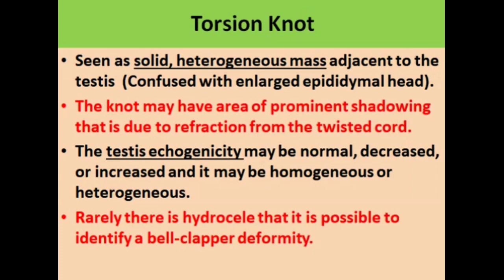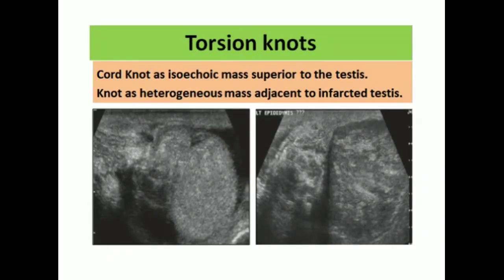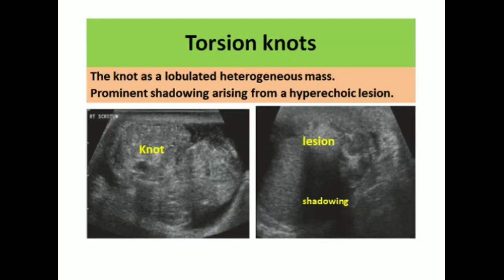The testicular echogenicity may be normal, decreased, or increased, and the echo texture may be homogeneous or heterogeneous. Rarely there is a hydrocele, and due to the presence of this hydrocele it is possible to identify a bell clapper deformity very clearly. In one image the torsion knot is present while the testis appears somewhat normal; in another image the knot of the torsion is visible and the testis is infarcted. Shadowing is also appreciated at the knot of the torsion.